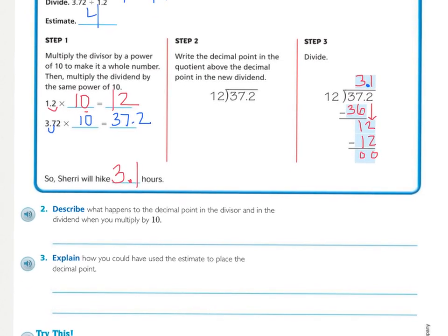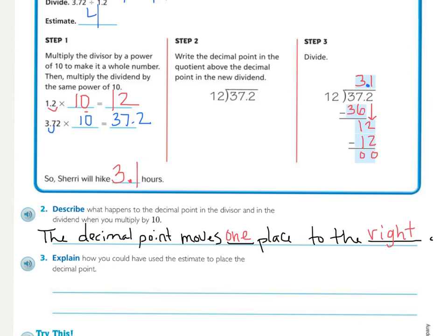Looking at number 2, they say describe what happens to the decimal point in the divisor and the dividend when you multiply by 10. To answer that question, you should be able to fill in the blanks. The decimal point moves one place to the right.